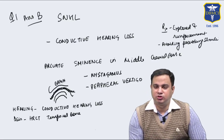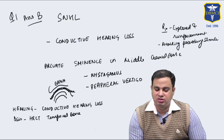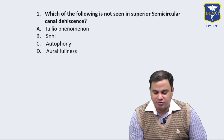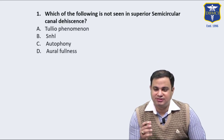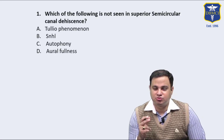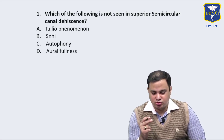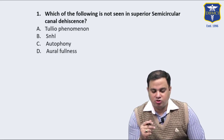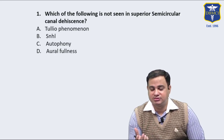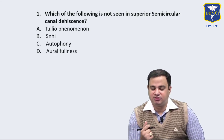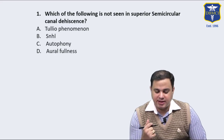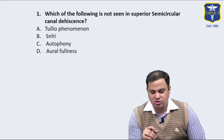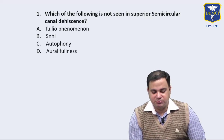In superior semicircular canal dehiscence syndrome, the hearing loss is conductive, not sensorineural. The Tullio phenomenon — vertigo on exposure to loud noise — can be seen in Meniere's disease and also in SSCD. Autophonia, where the patient hears their own voice very clearly, and aural fullness are also features of SSCD. So the answer is B — SNHL is not seen.